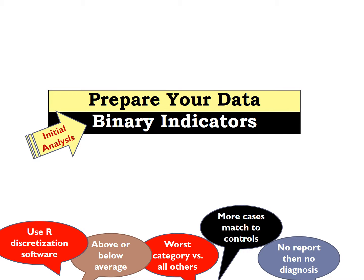The initial analysis needs to be conducted on binary indicators. You can use R packages available to discretize your data, or you can also do this by hand. For example, you can take a continuous variable and any value above or below the average becomes a binary variable. For non-monotone variables, you can take the worst category as the indicator of the binary variable and all others as zero. The important thing is to take as large a contrast as possible so you can see the effect of that variable. When there are no reports, you can assume that variable has a zero entry for that diagnosis.